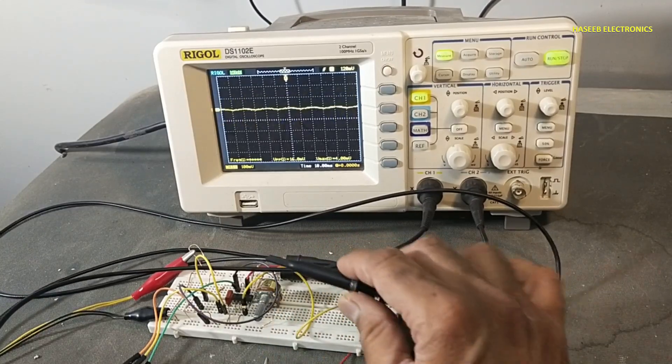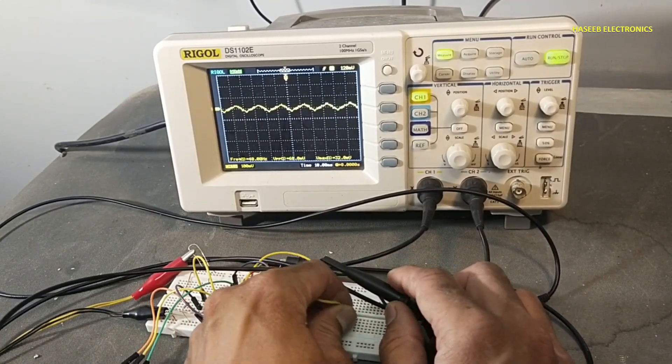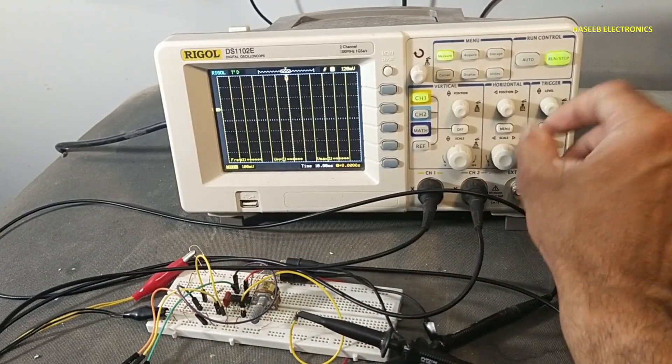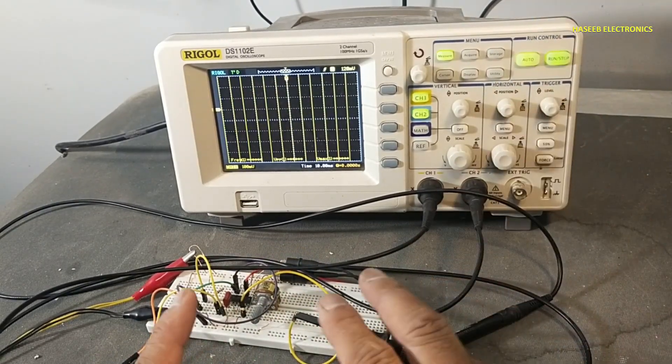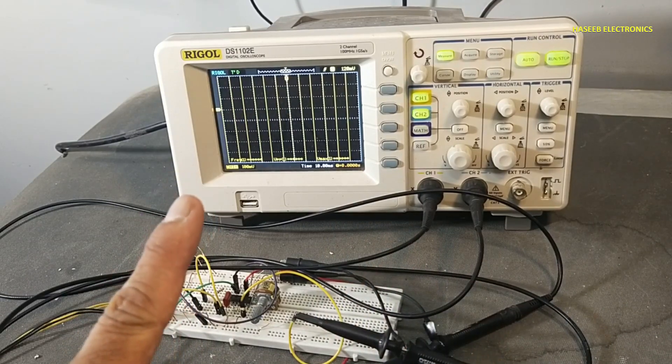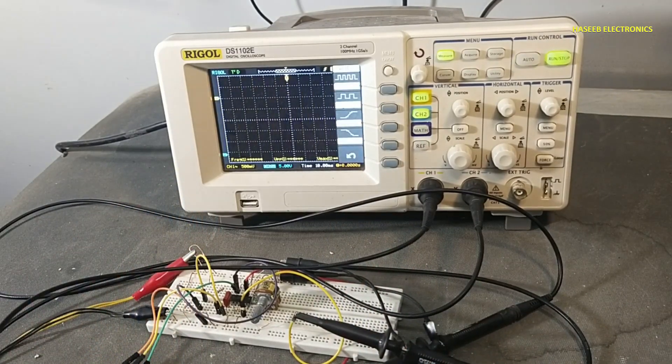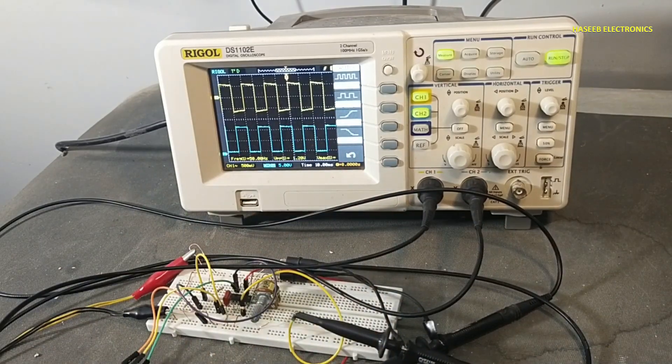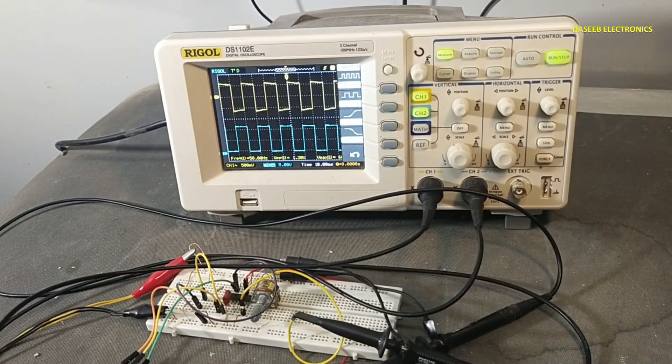This 100 hertz will divide into two channels: channel A, channel B. It is giving exact 50 hertz.